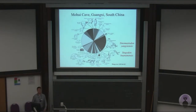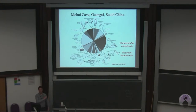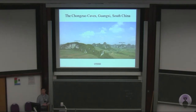In South China we have an enormous abundance of Pleistocene mammal fossils — this is the fauna excavated from just one cave in South China alone. And the good thing is, in the nearby area we have a huge number of these caves, represented by the white dots on the photograph.